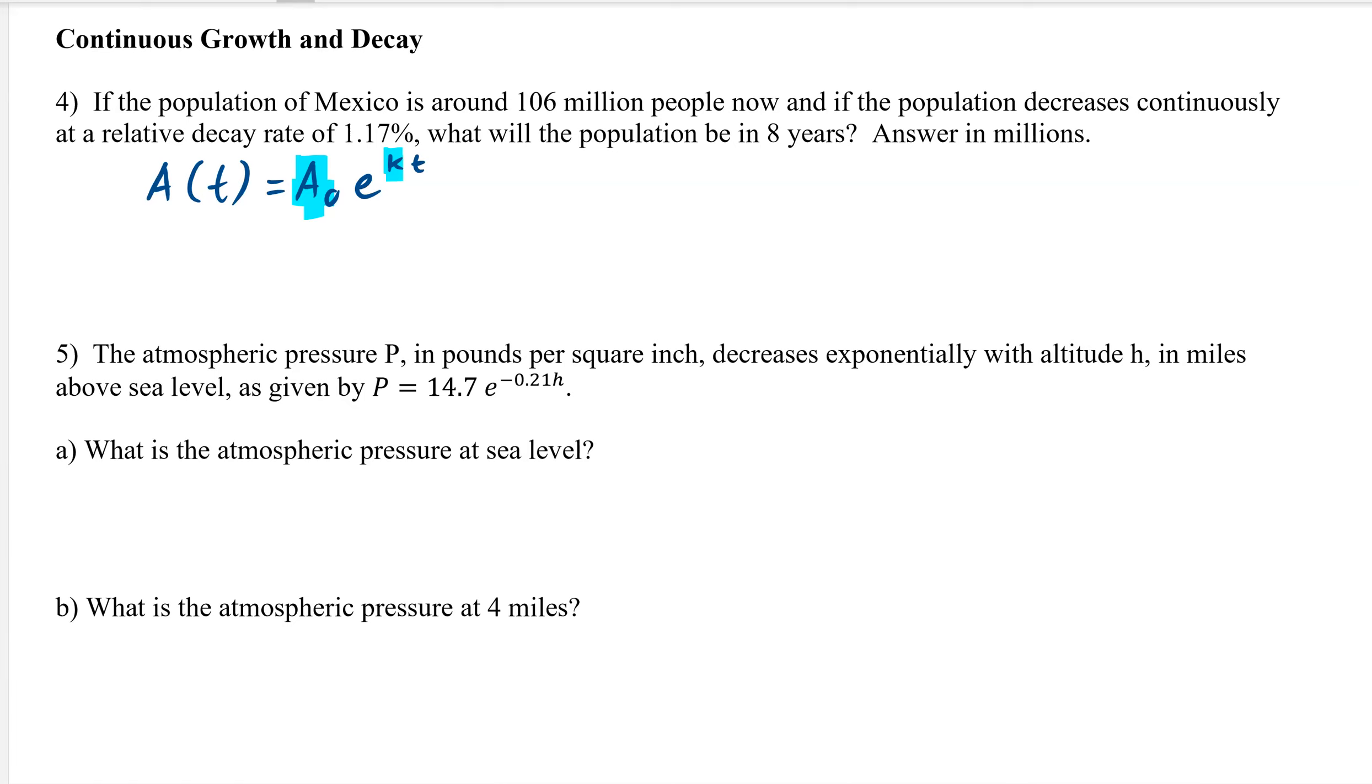So if the population of Mexico is around 106 million now, see now that's talking about our initial, so we can already start and say that that's 106. We do need to make a little note that A is number of people in millions because otherwise we're talking about 104 people, which is definitely not true. So 106 million people.